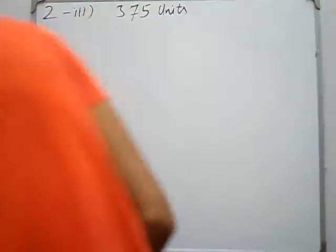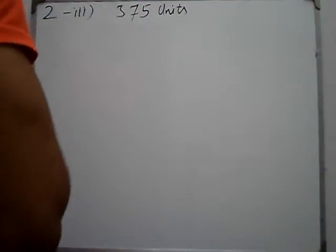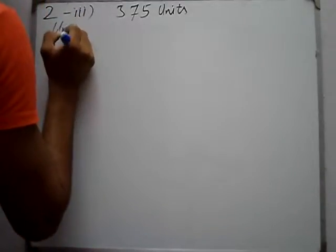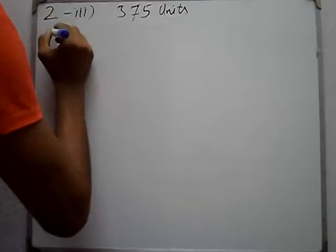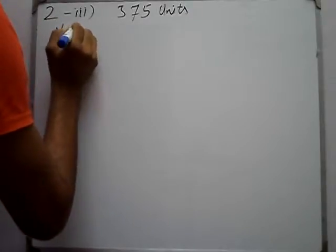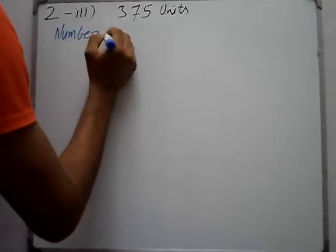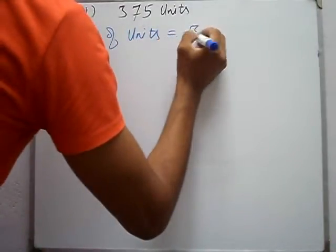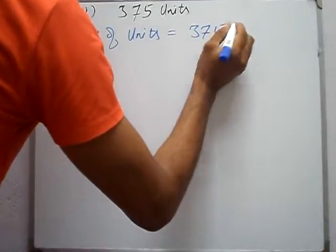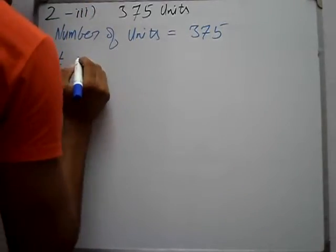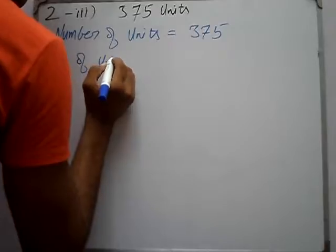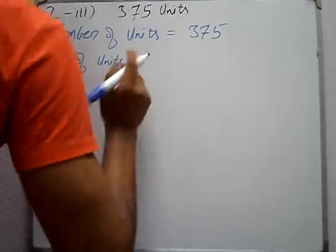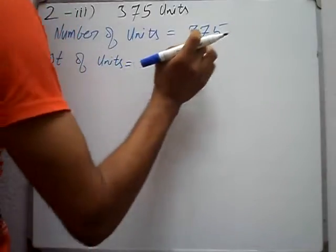Number of units is 375. We will find the utility bill with electricity. We will find the number of units — 375. Cost of units in Rs: divide 375 into slabs.